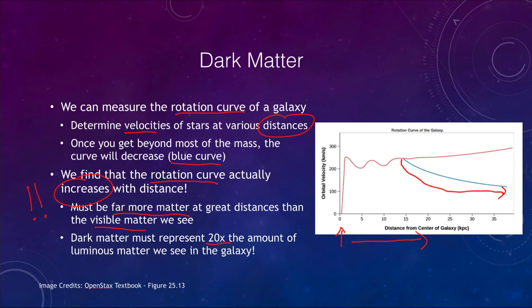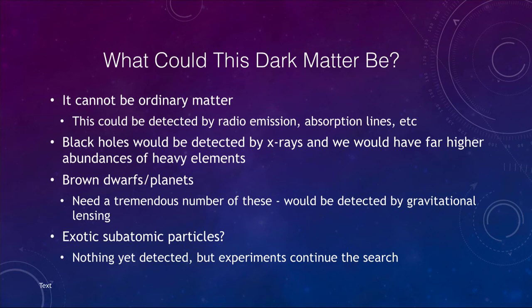This dark matter can represent 20 times the amount of the luminous matter we see within our galaxy — there's matter out there that we simply cannot see. Now what could this dark matter be? We know it could not be ordinary matter — atoms, dust, and gas — because we would detect it. We could detect gases by radio emissions.